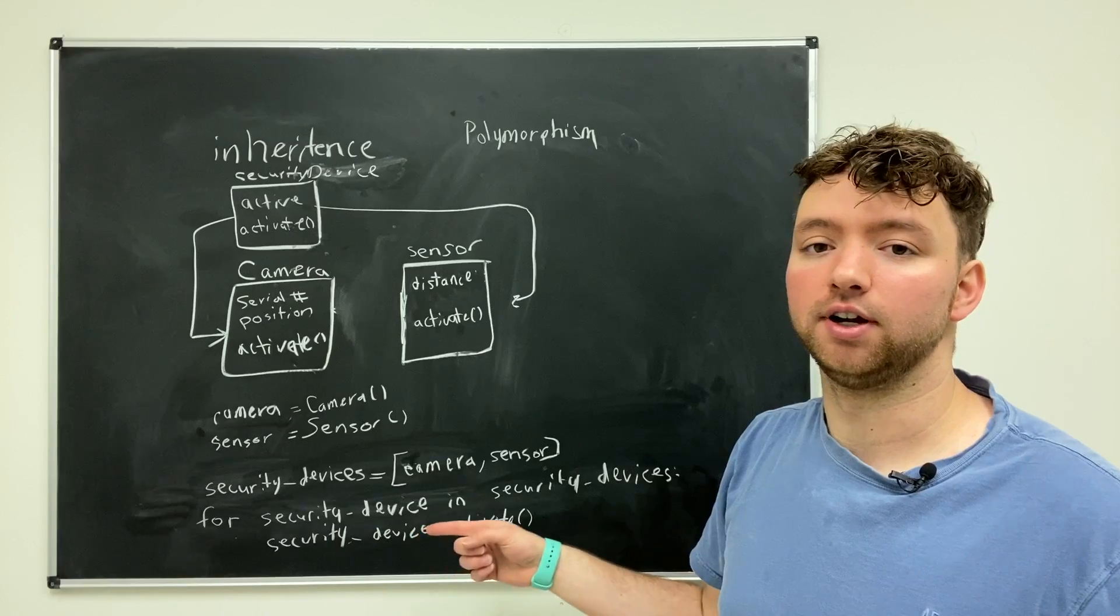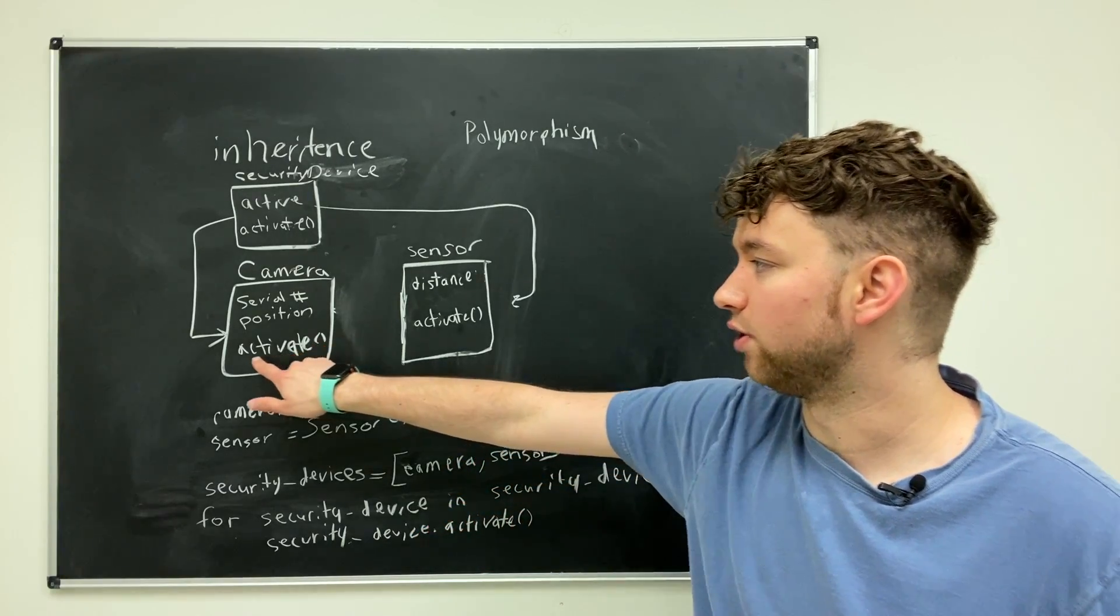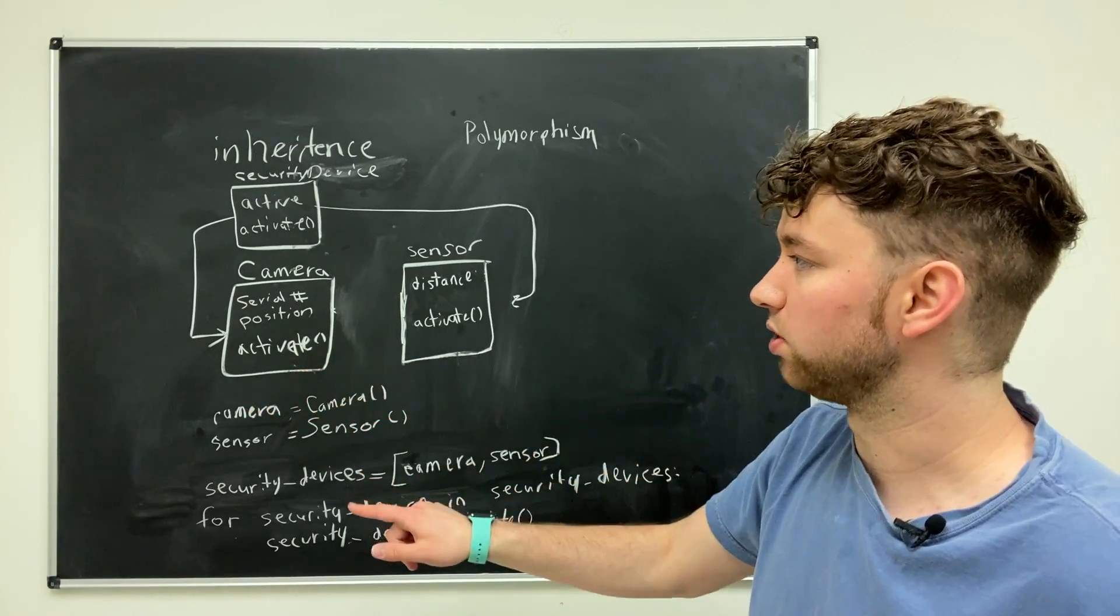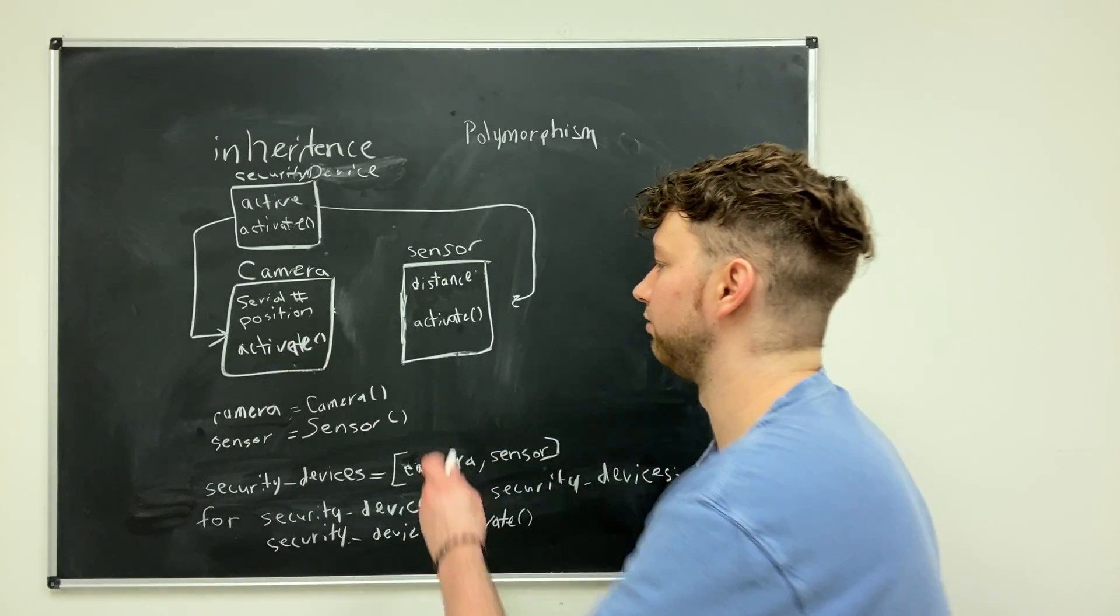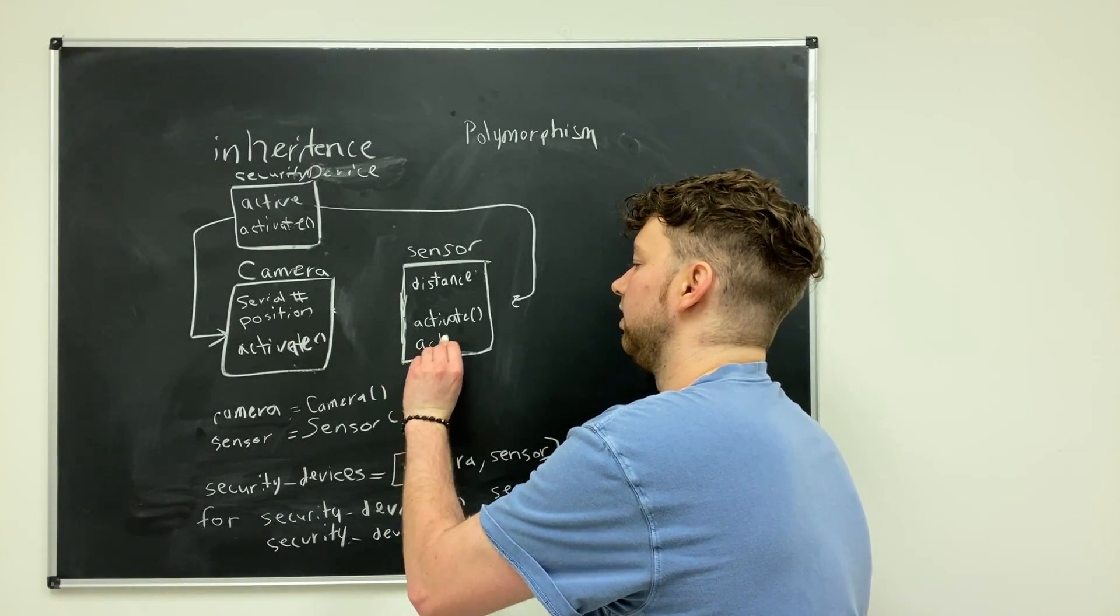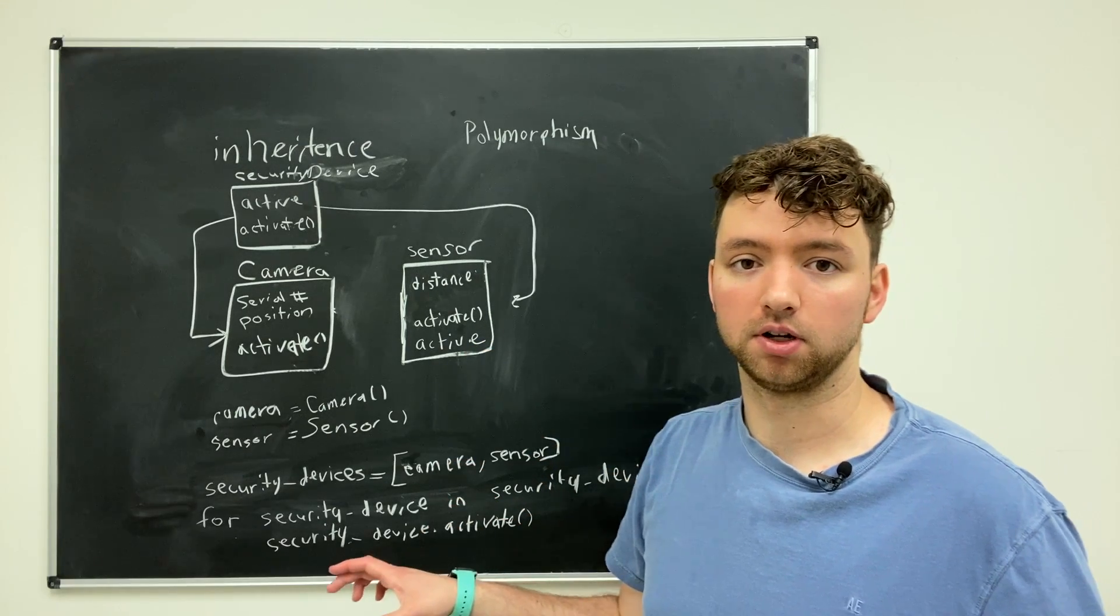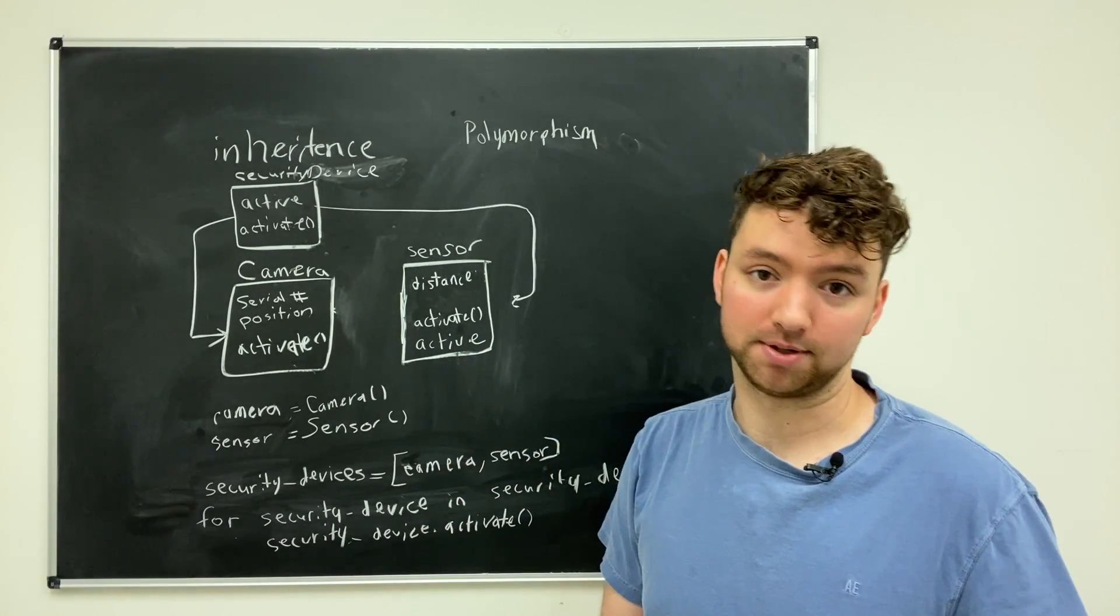So yeah, that's polymorphism treating a bunch of derived classes as a base class. And if there is the option to invoke a more specific method or access a more specific attribute, for example, if we redefined active in here, then it will do the more specific one. Okay, the last thing is encapsulation.